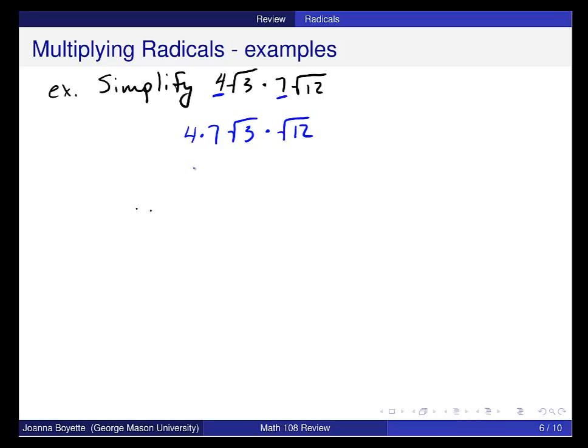And then using the property that I just used, I can combine these under 1 square root. So this is 28 square root of 36, and the square root of 36 is just 6. And that should be 168.